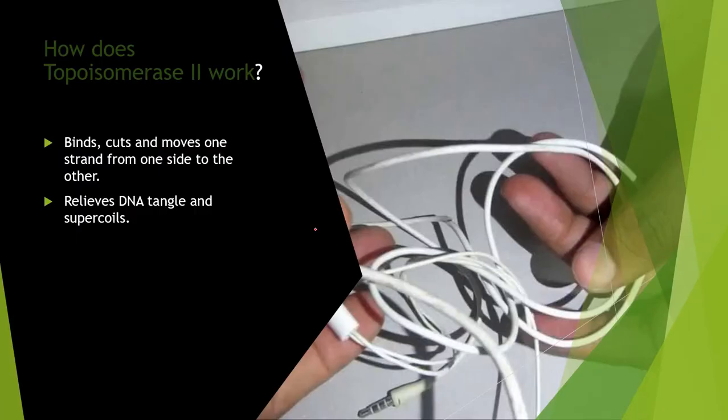Now, how does topoisomerase II work? What it does is it binds, cuts, and moves one strand from one side to the other, relieving DNA tangles and supercoils. You can look at your headphones, for example - whatever headphones you have, they usually get tangled up. This is where topoisomerase II comes in.